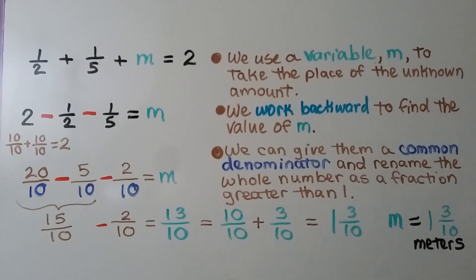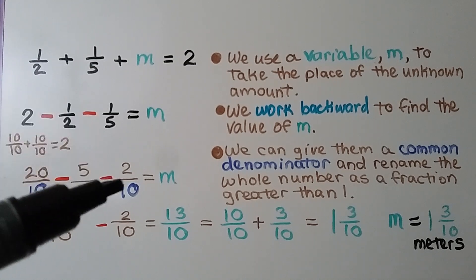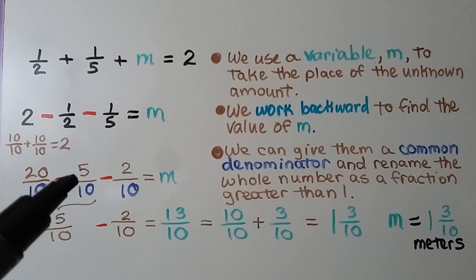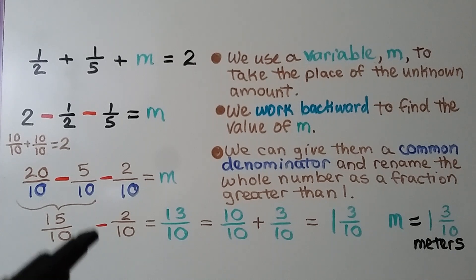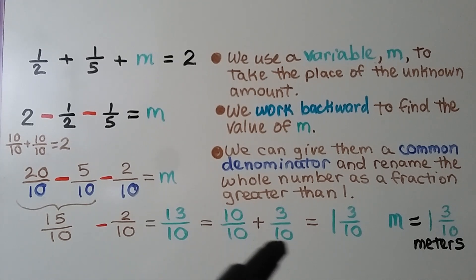We have 1 half plus 1 fifth plus m equals 2. We work backward to find the value of m. We give them a common denominator — 2 and 5 can meet at the multiple 10. So 1 half becomes 5 tenths, 1 fifth becomes 2 tenths, and the whole number 2 we write as 20 tenths, because 10 tenths plus 10 tenths equals 2 whole. Now we subtract: 20 tenths minus 5 tenths is 15 tenths; minus 2 tenths is 13 tenths. 13 tenths equals 10 tenths plus 3 tenths, which equals 1 and 3 tenths. So m equals 1 and 3 tenths.